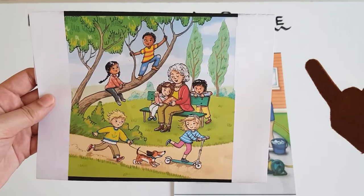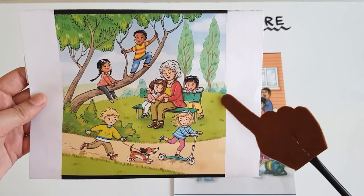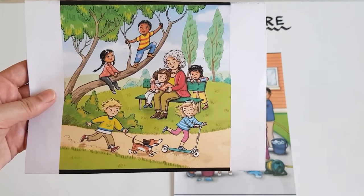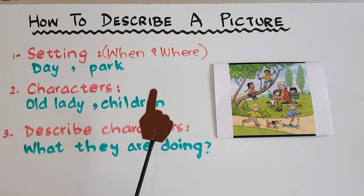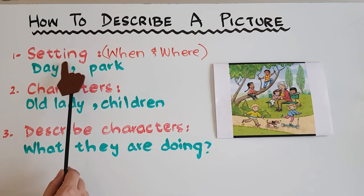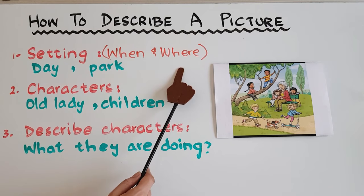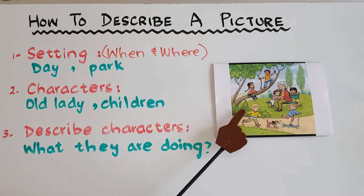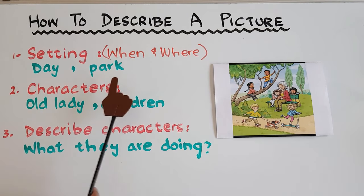What is setting? Setting is simply when and where something happened. As you can see in this picture, it's daytime and the scene is of a park, so setting is 'day' and 'park.' Let's make some notes on the board as well.